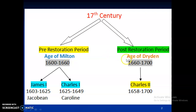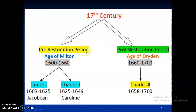The post-restoration period is also known as the Age of Dryden, because in this era — from 1660 onward up till 1700 — Dryden was the poet and prose writer who was the main figure. These are roundabout dates. Students of BS English first semester can now fix these two periods in their memory: pre-restoration and post-restoration, Age of Milton and Age of Dryden, roughly 1600 to 1660 — about 60 years — and then 40 years.